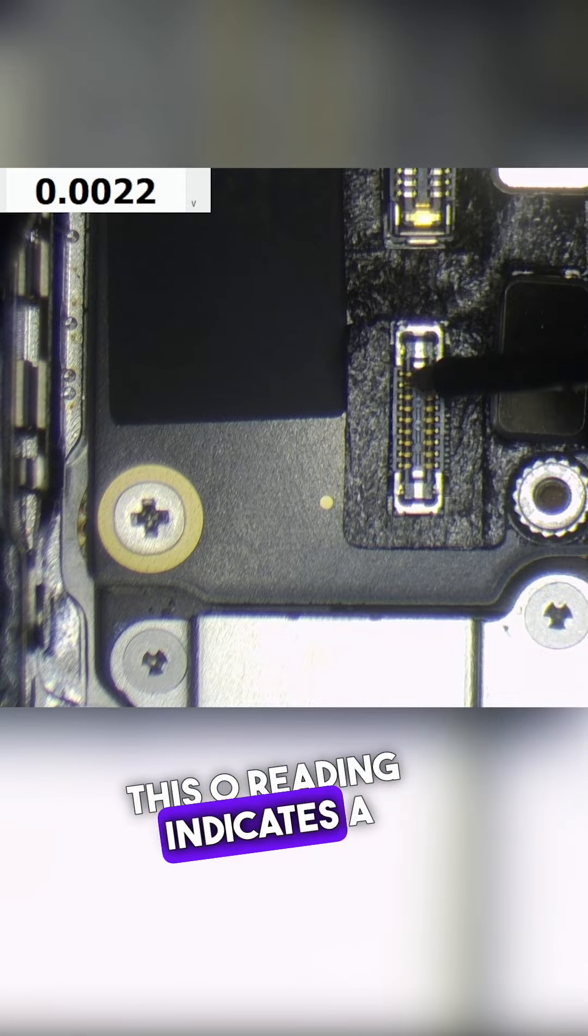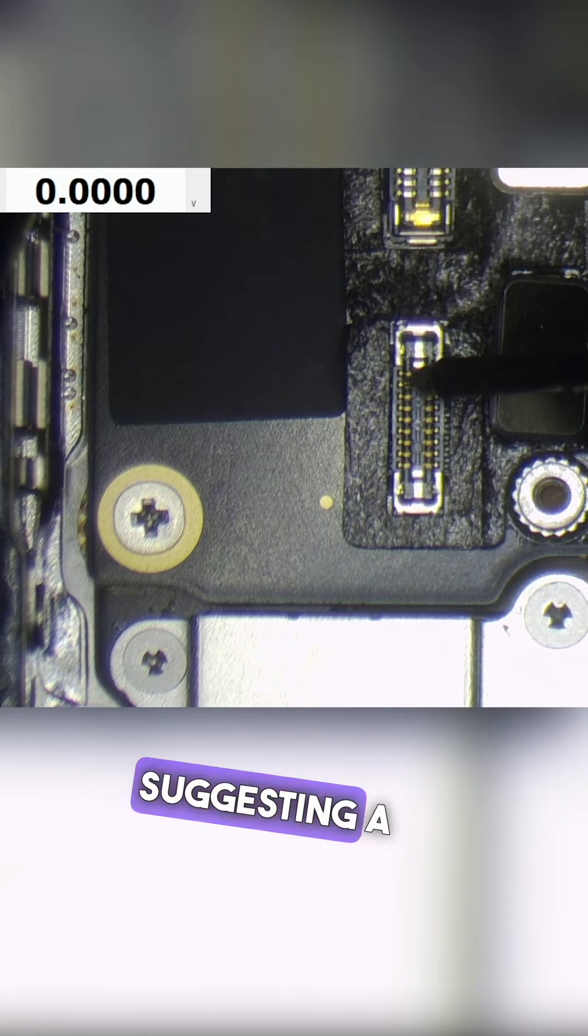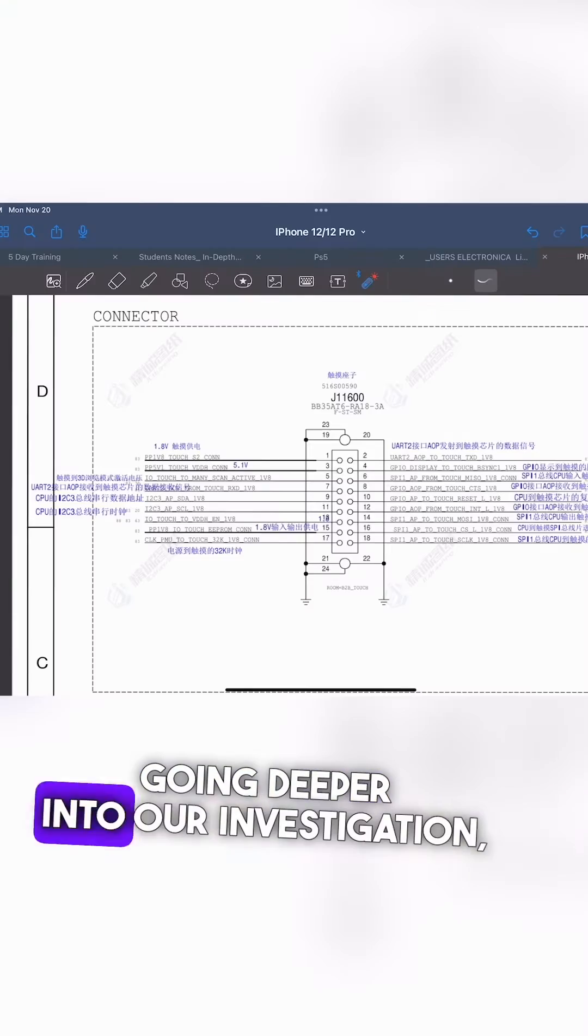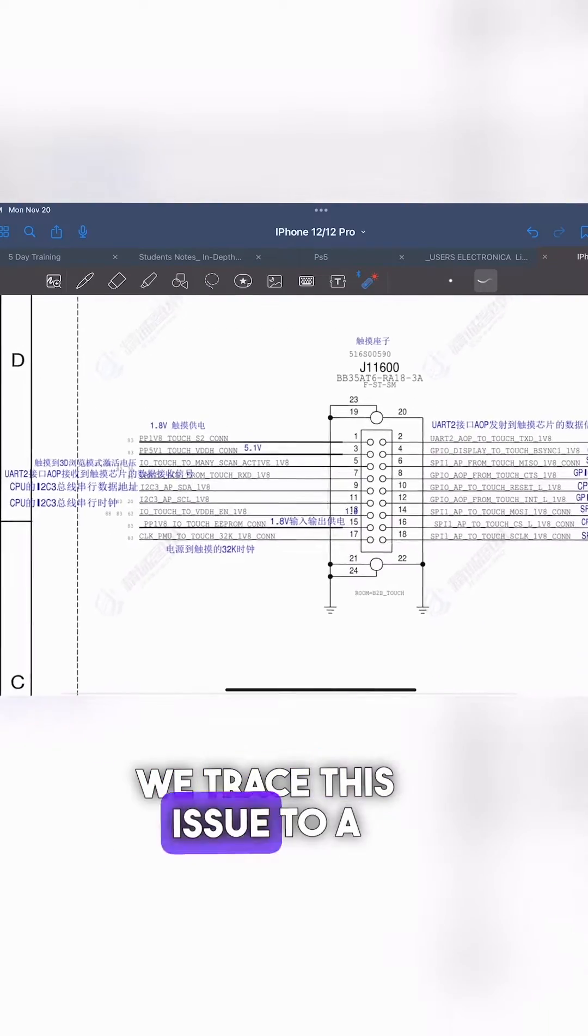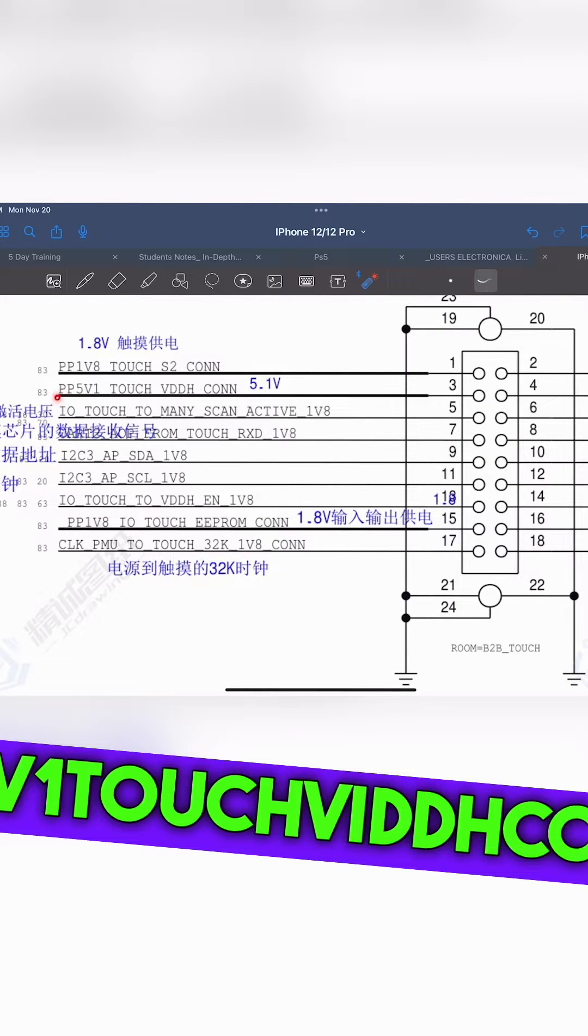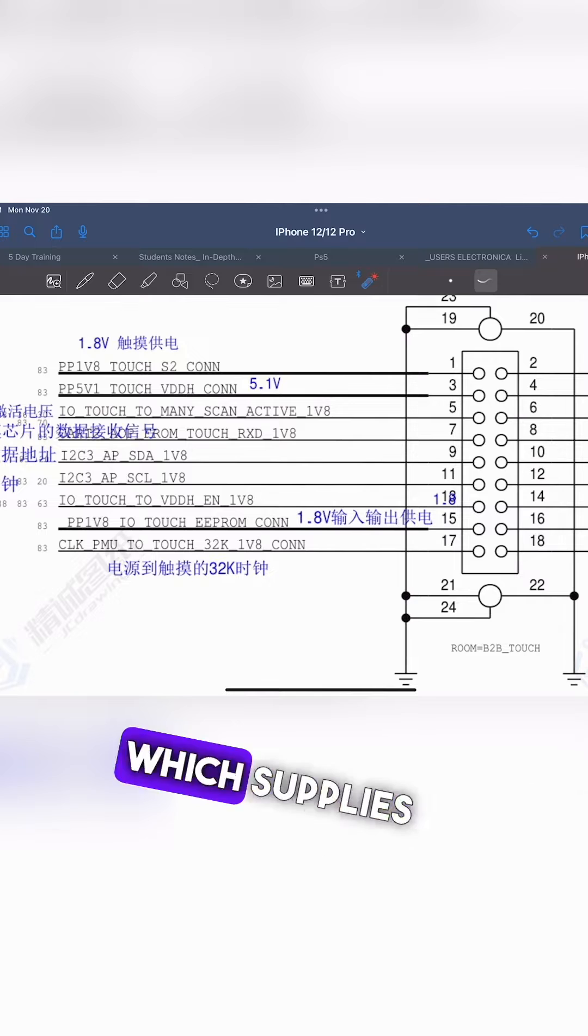This 0 reading indicates a grounded line, suggesting a short circuit. Going deeper into our investigation, we trace this issue to a pin connected to a line called PP5V1 Touch VDDH Con, which supplies 5.1 volts to the touchscreen.